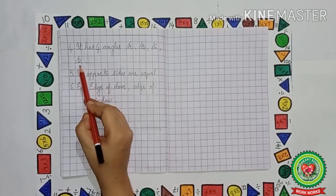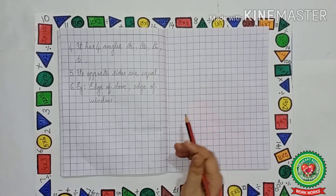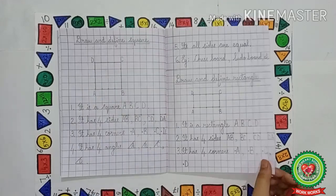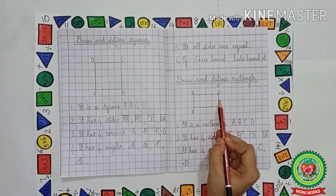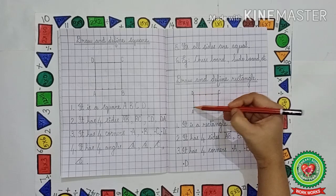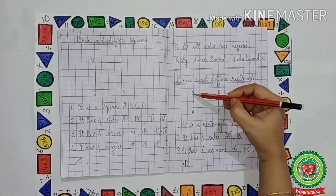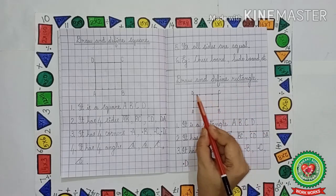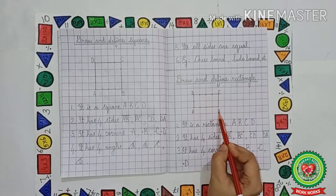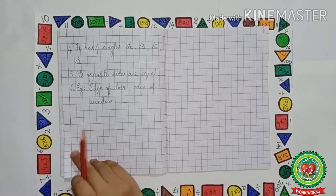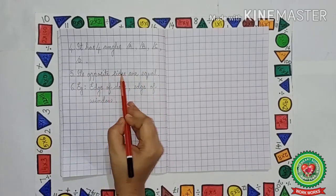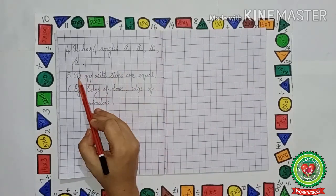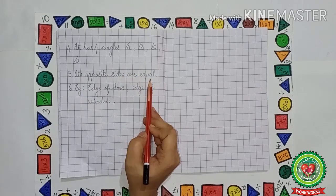Now kids, we have seen that all sides of a square are equal. But in rectangle, the opposite sides are equal. That is, DA is equal to CB, and AB is equal to DC. So we will write: its opposite sides are equal.